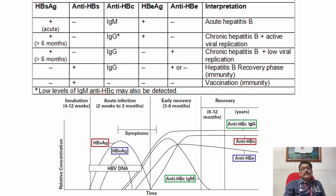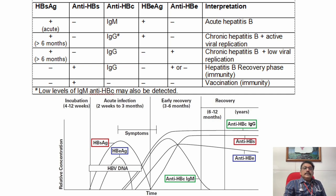These are the investigations at various stages of Hepatitis B. In acute hepatitis: HBS-AG positive, anti-HBC IgM positive, HBE antigen positive. In chronic hepatitis B with active viral replication: HBS-AG present more than 6 months, IgG anti-HBC positive, HBE antigen very high. In chronic hepatitis B with low viral replication: IgG anti-HBC present, anti-HBE seen. In recovery phase: anti-HBS positive, anti-HBC IgG positive, anti-HBE may or may not be positive. In vaccination: anti-HBS is positive.